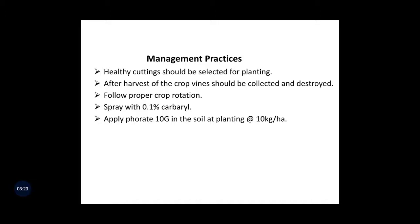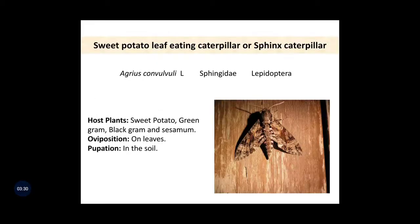That is all about the first and major pest of sweet potato, that is sweet potato weevil. The second pest of sweet potato is sweet potato leaf eating caterpillar, also called spinax caterpillar, that is Agrius convolvuli. It belongs to family Sphingidae and order Lepidoptera.